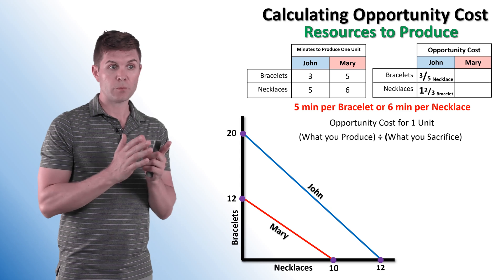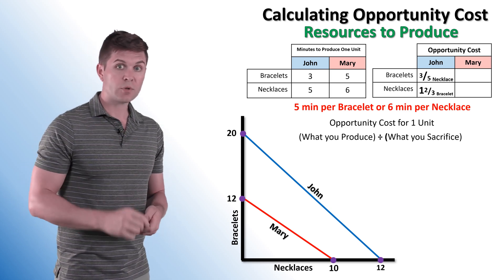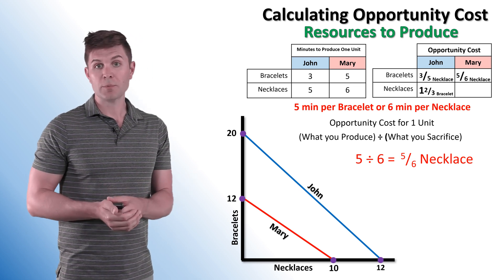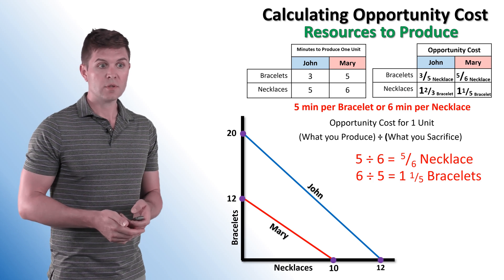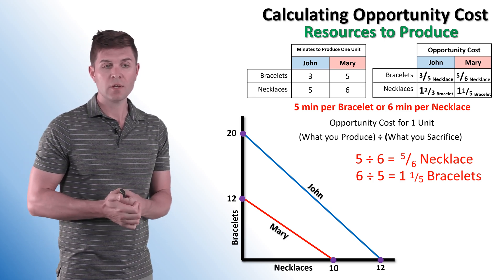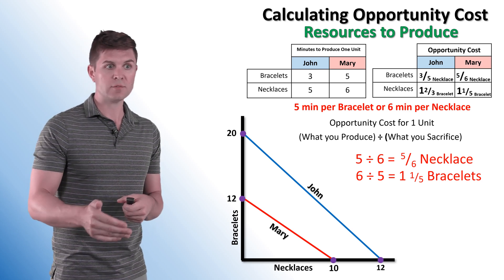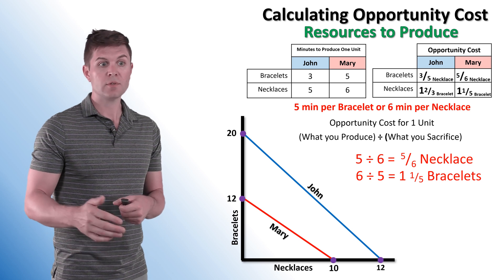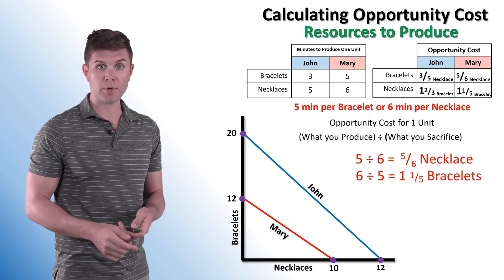Now shifting to Mary: she can produce a bracelet in five minutes or a necklace in six minutes. For the opportunity cost of a bracelet, five divided by six equals five-sixths of a necklace. For the opportunity cost of a necklace, six divided by five — what we produce divided by what we sacrifice — gives one and one-fifth bracelets. So one necklace has an opportunity cost of one and one-fifth bracelets.